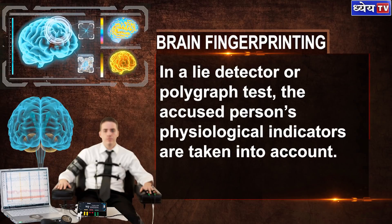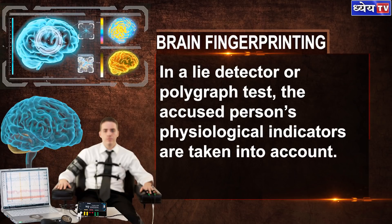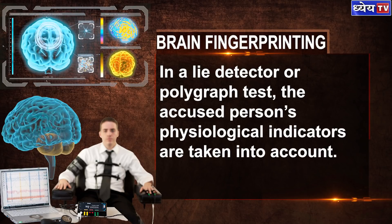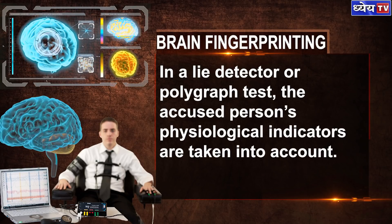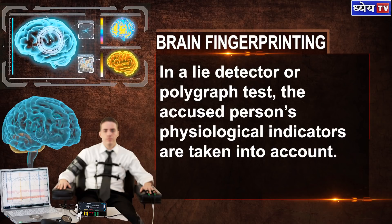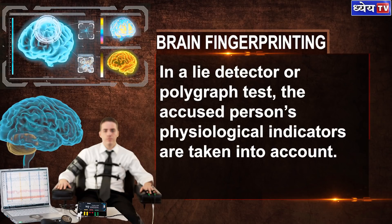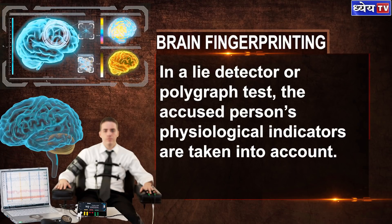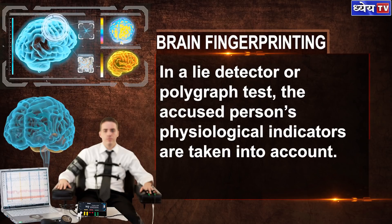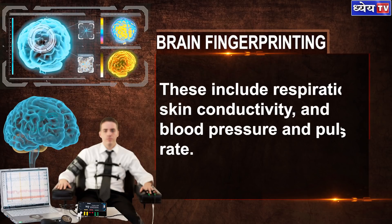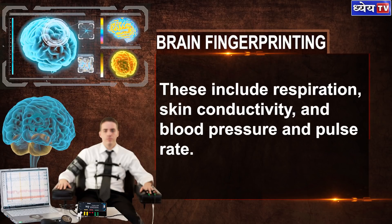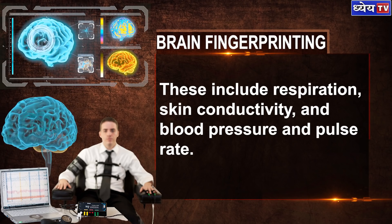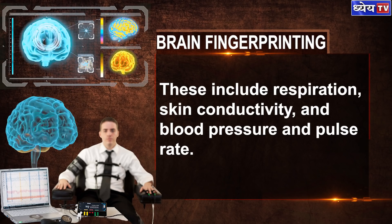Now, let us understand the difference between the BEOSP test and a lie detector test. In a lie detector or polygraph test, the accused person's physiological indicators are taken into account. These include respiration, skin conductivity, and blood pressure and pulse rate.